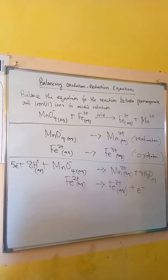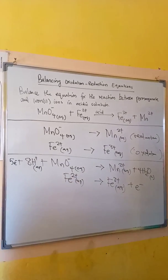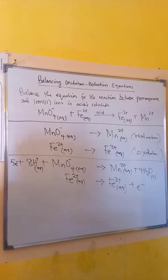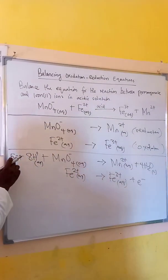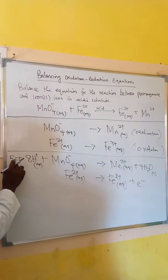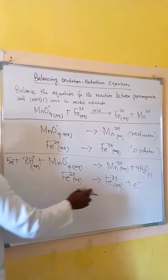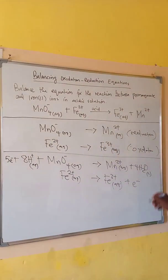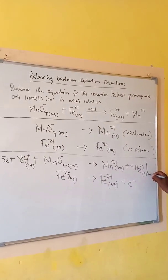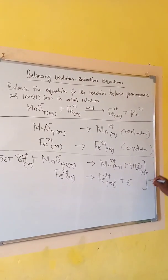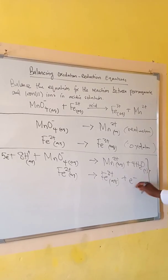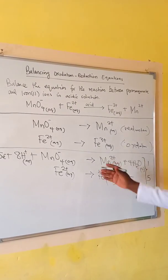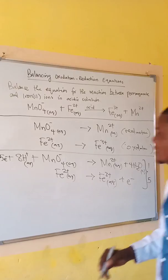At this point we equalize the number of electrons transferred. The reduction half has five electrons, while the oxidation half has only one electron. To make the electrons gained and lost equal, we multiply the oxidation half-reaction through by five.